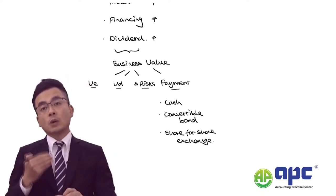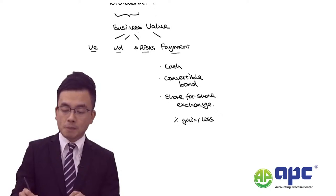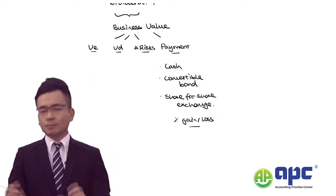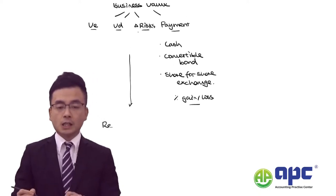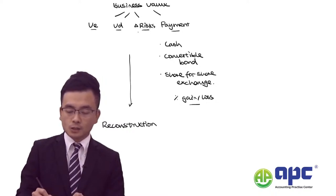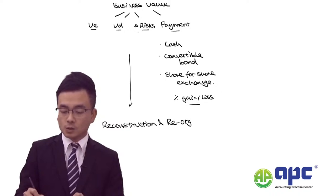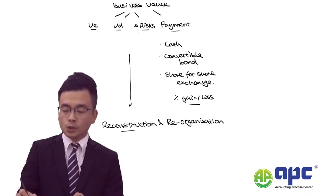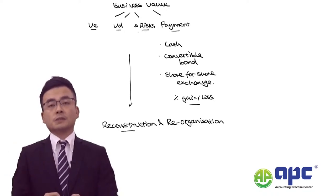We will need to calculate the percentage of gains and losses as a result from each of the payment methods in the exam. If the business is not doing a good job, we will need to think about the reconstruction and reorganisation of the business, which simply means that we're going to be saving the business — reconstructing it.